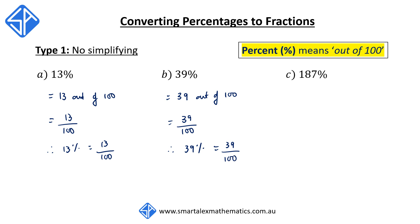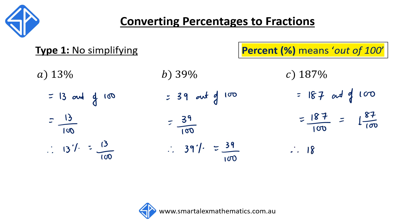For 187%, this is the same as 187 out of 100. We can write this as 187 over 100. This is an improper fraction, so we can convert this to a mixed fraction. 87 over 100 can't be simplified, so therefore 187% is the same as one whole and 87 over 100.